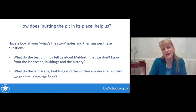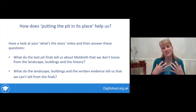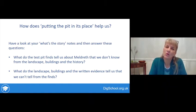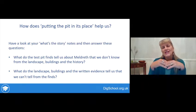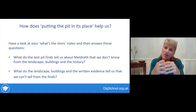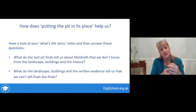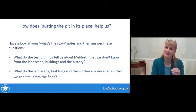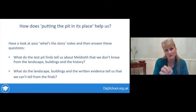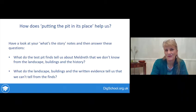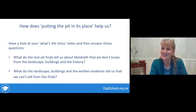Now have a think: note down how putting the pit in its place helps us understand the finds. Look back at your 'what's the story' notes and consider: what are the test pit finds from Meldreth telling us that we don't know from the landscape, buildings, and history? And turning the question around — what do the landscape, buildings, and written evidence tell us that we can't determine from the finds alone? In Part 2 we'll look at another way in which putting test pits in their place can help us understand.